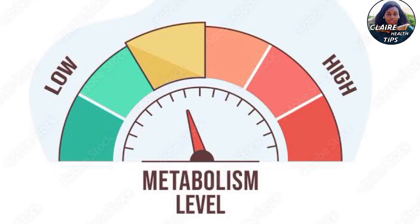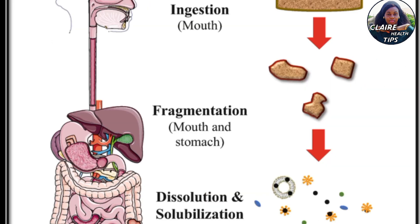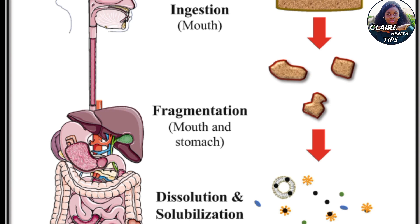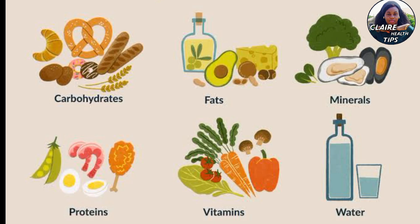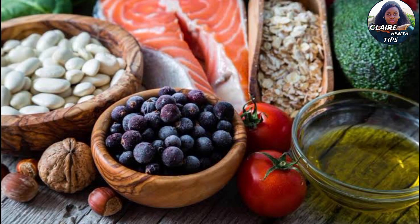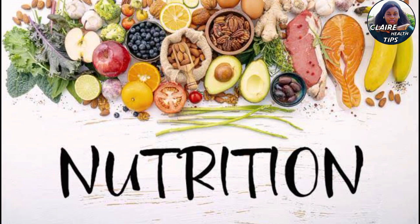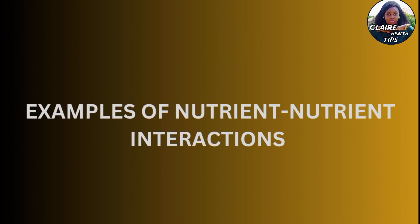High or low levels of one or more nutrients may affect the bioavailability of other nutrients. These interactions can affect all major categories of nutrients — proteins, carbohydrates, fats, vitamins, and minerals. Understanding nutrient interactions is crucial for optimizing nutrition and preventing nutrient deficiencies or imbalances.